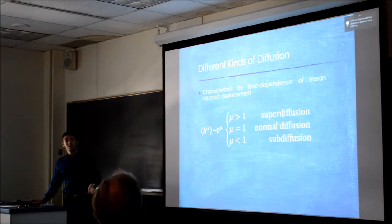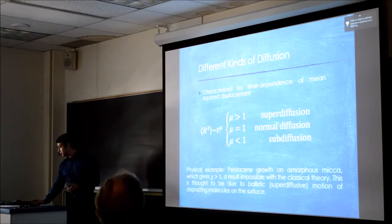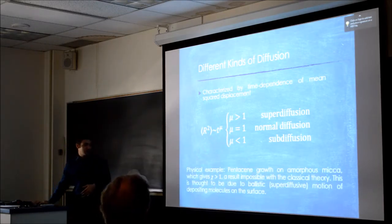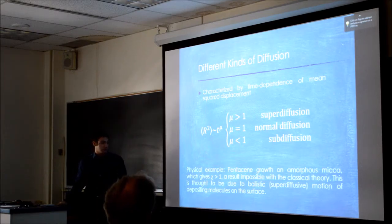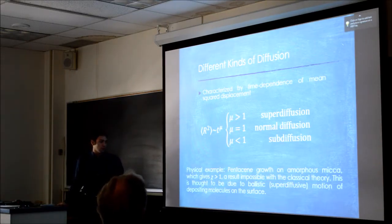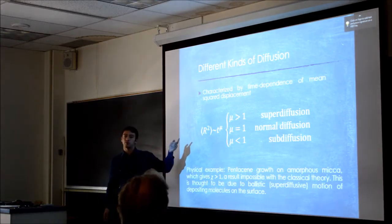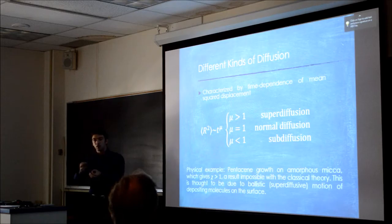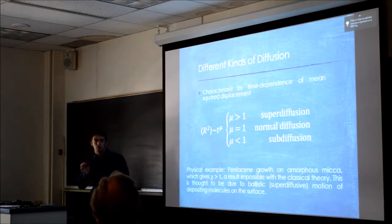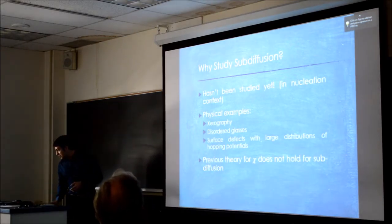As I said earlier, my project is on sub-diffusion, and I find sub-diffusion particularly interesting. Before I tell you about that, there are lots of physical examples of all of these things. In particular, a previous REU student working for Dr. Marr was working on pentacene growth, where the theory that I showed you guys before doesn't hold, and we think that it's because they're actually super-diffusive. The atoms have a weaker interaction with the substrate, and so they go farther before they switch directions.